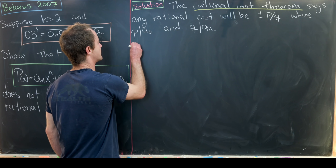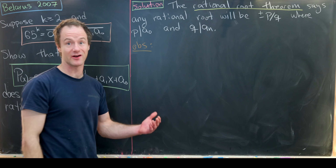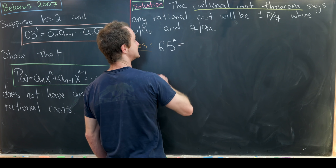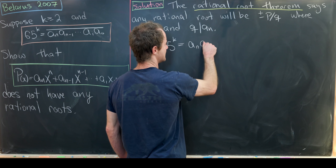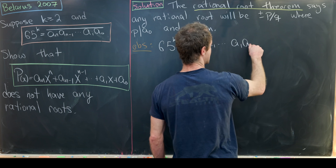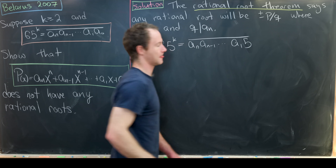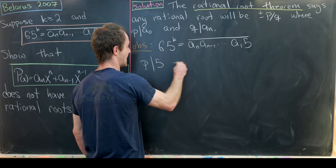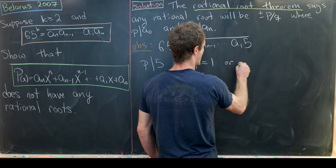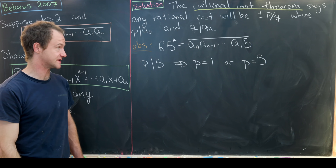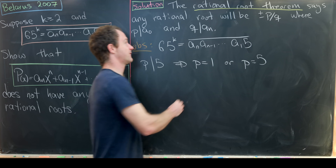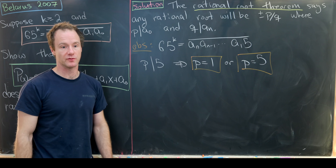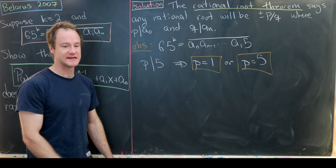Our solution starts with a pretty obvious observation: 65 to the k power has a 1's digit of 5. So we can write it as a_n a_{n-1} ... a_1 5. This divisibility fact tells us that p must equal 1 or p must equal 5 — those are the only two choices for the numerator of our possible rational root.